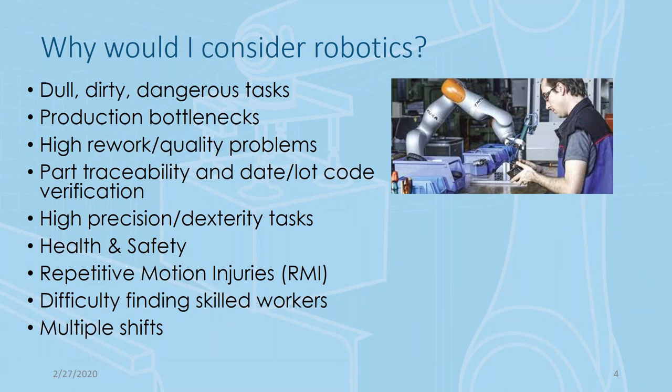When talking about robotics, why would that even be something we'd consider? You'll hear quite often about the three Ds — the dull, the dirty, the dangerous. Think of dull as those repetitive tasks where a human operator does the same task over and over all day long. Dirty and dangerous tasks raise health and safety concerns — not ideal conditions for human operators, but great opportunities for robotics.